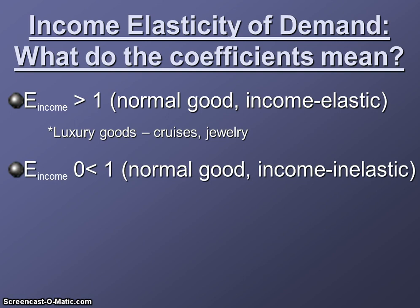If your income elasticity of demand is positive but less than one, that means the good is income inelastic — these would be necessities: food, clothing, etc. So: any positive number is a normal good. If it's greater than one, it's income elastic, which means it's a luxury. If it's less than one, it's income inelastic, which means it's a necessity.